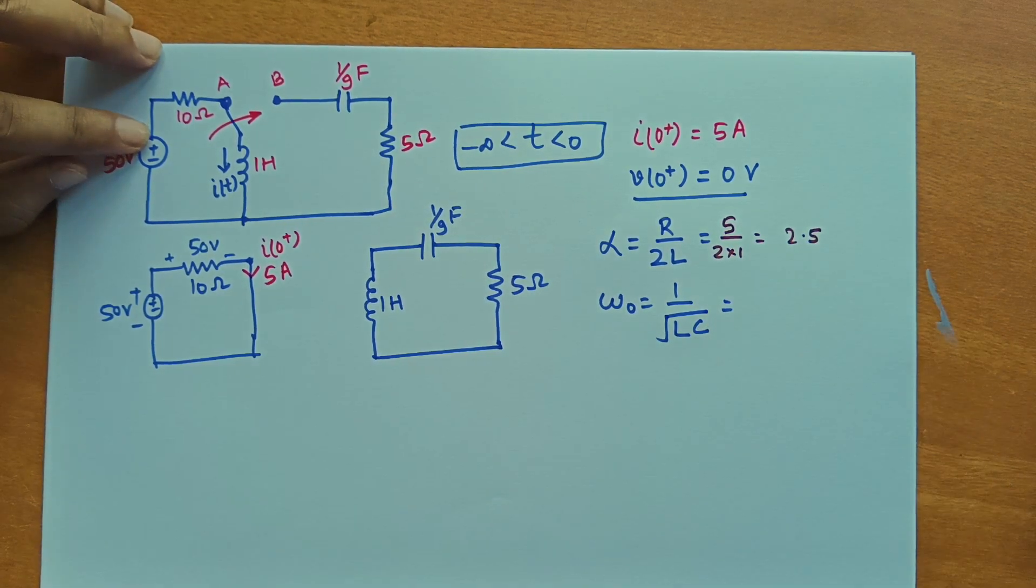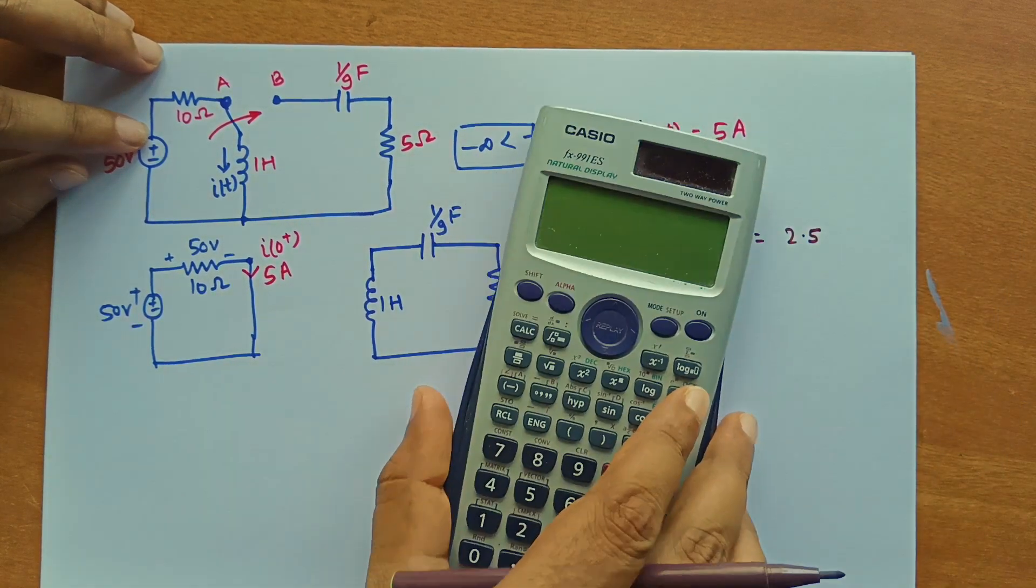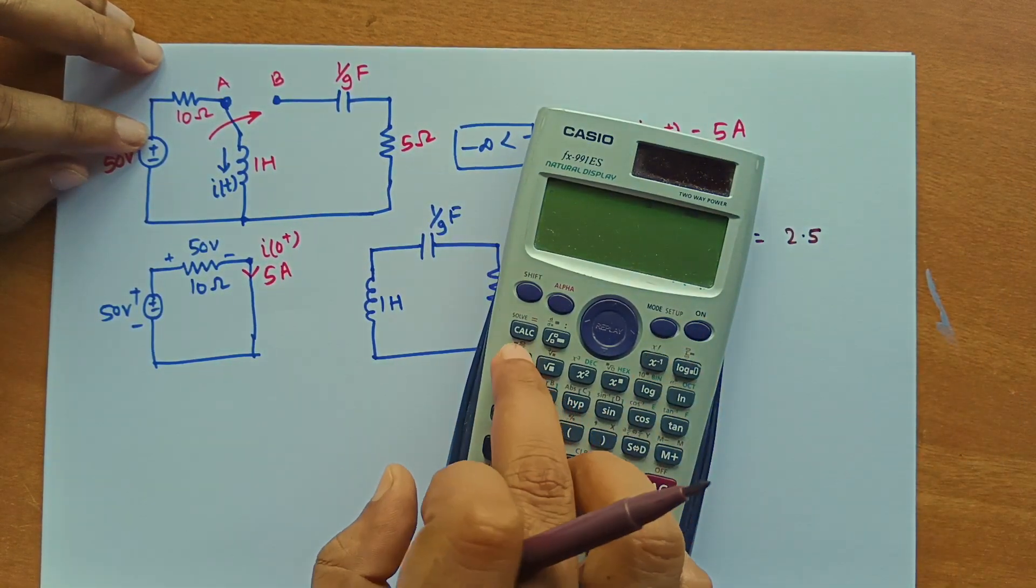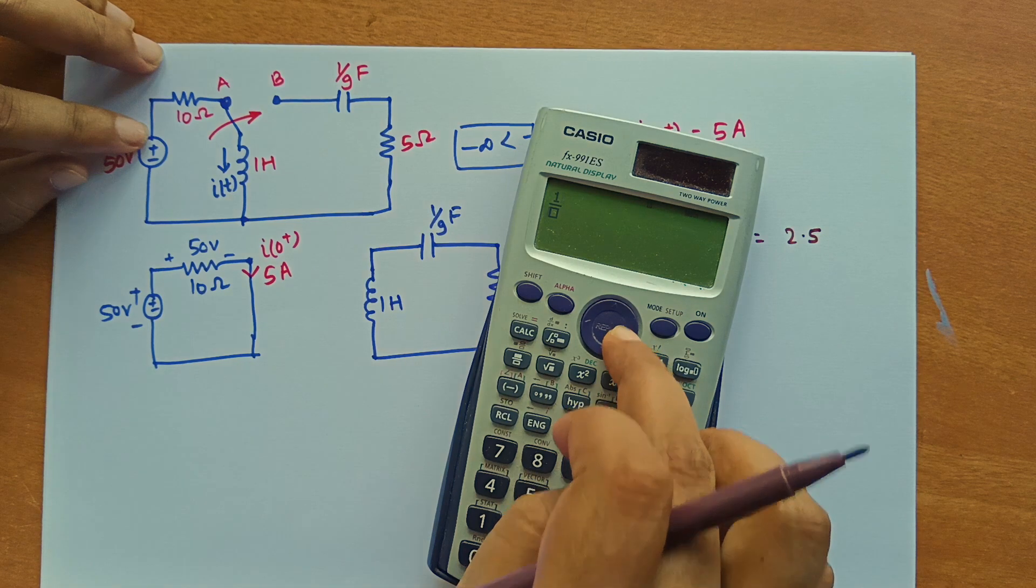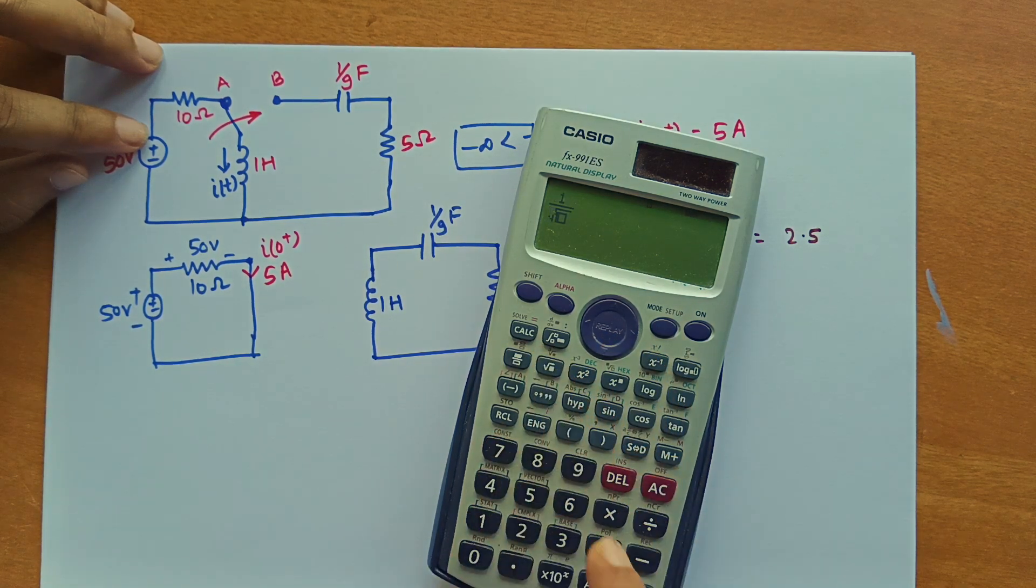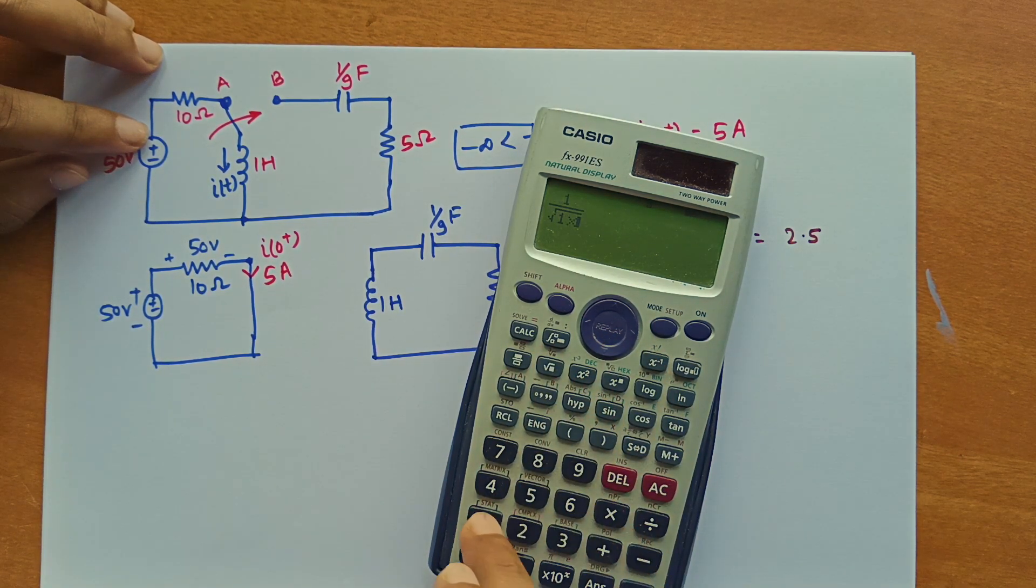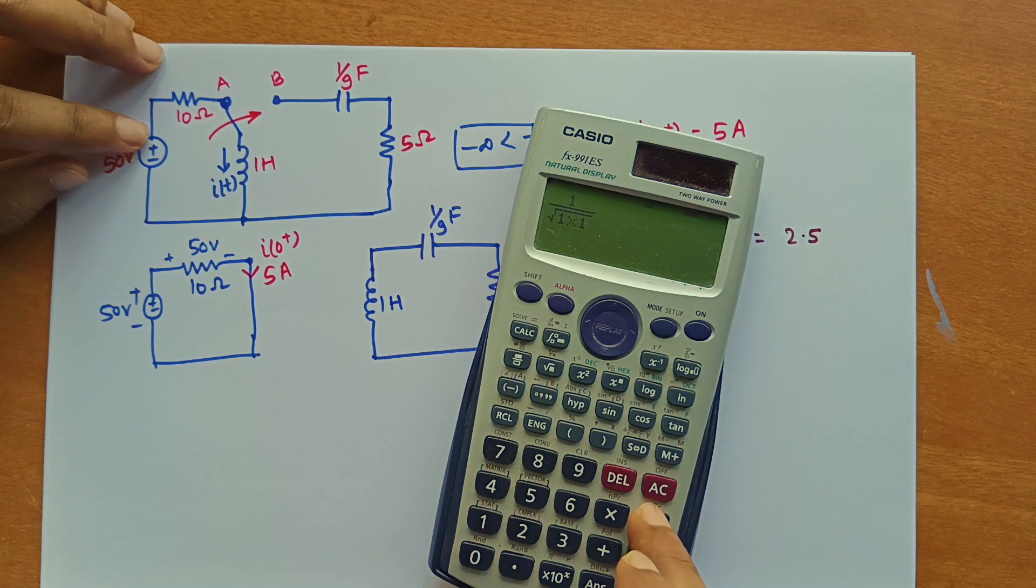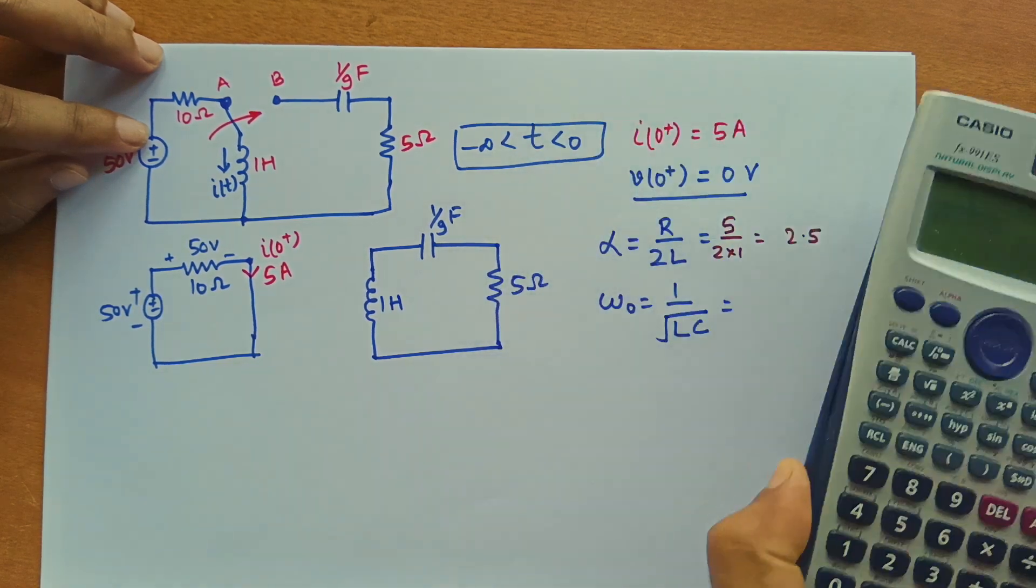So we can calculate 1 by root LC as 1 divided by under root 1 Henry into 1 by 9 Faraday. So this gives us 3. So you can see here alpha is less than omega 0.